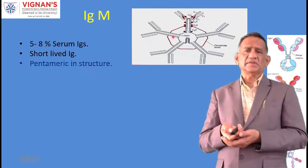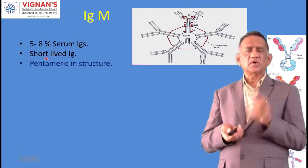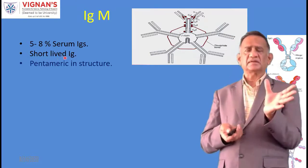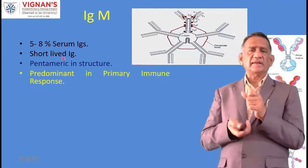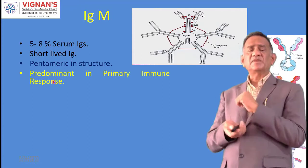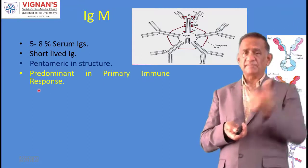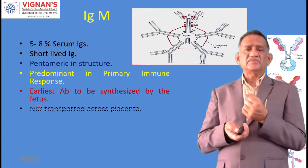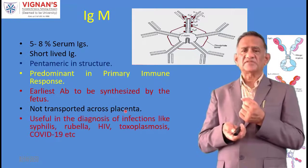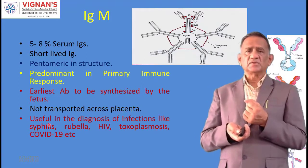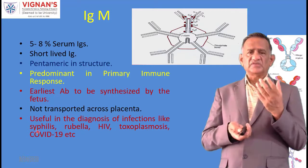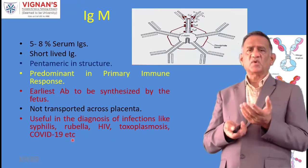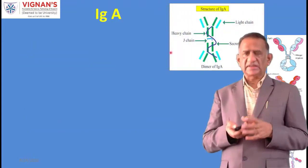IgM is short-lived - in COVID-19 testing, IgM appears first and IgG appears later. IgM is non-specific while IgG is specific. IgM has a pentameric structure and is predominant in the primary immune response. It is the earliest antibody synthesized by the fetus and is not transported across the placenta. IgM is useful in diagnosis of infections like syphilis, rubella, HIV, toxoplasmosis, and COVID-19.